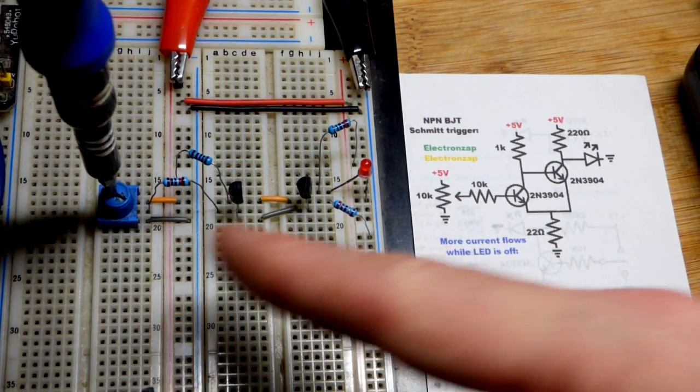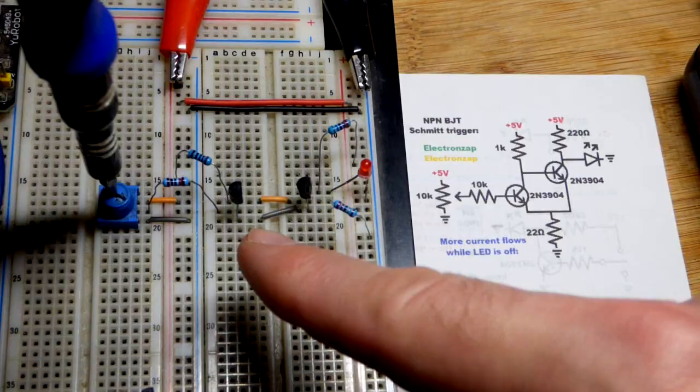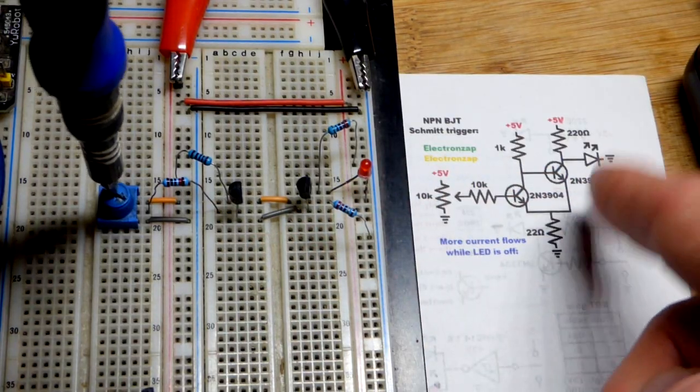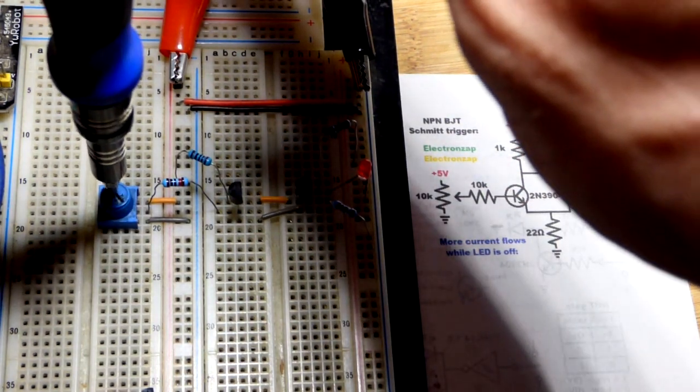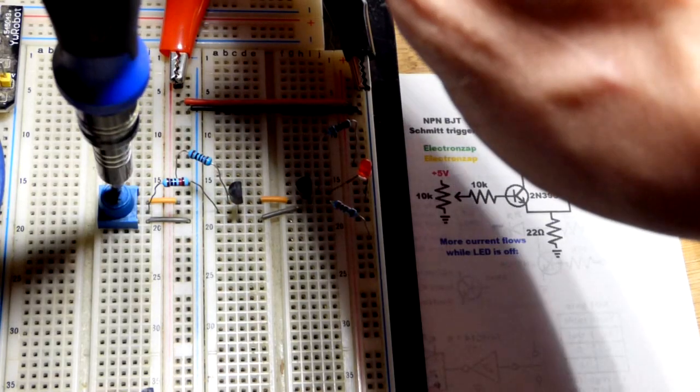So right now we have a low input, the LED is off, we're using NPN bipolar junction transistors. You could use just one, but if you use just one, there's going to be a point when you raise the base voltage where the LED starts glowing a little bit.